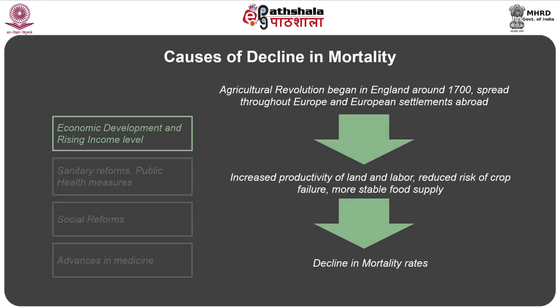Regarding economic development and rising income levels, in Europe, North America, and Oceania there was continuous economic progress resulting from agricultural and industrial revolutions, which was the main reason for mortality rate reductions that first began to decline in the 17th century and then with increasing tempo throughout the 18th and 19th centuries. With the agricultural revolution beginning in England around the 1700s and spreading throughout Europe, productivity of land and labour began to increase, the risk of crop failures was reduced, and the food supply became fairly steady, bringing mortality rates down drastically.